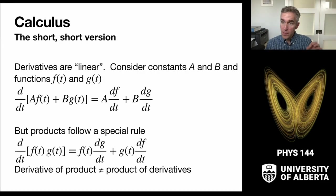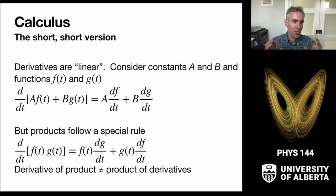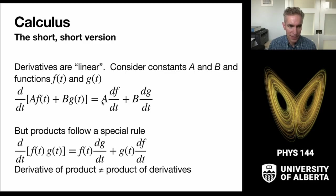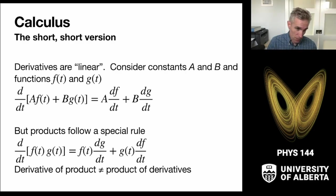The first mathematical tool is that derivatives are linear. Linear means that if I have a combination of two functions, f(t) and g(t), multiplied by constants A and B, I can pass the time derivative operator in and apply it to f and g separately, pulling the constants out front. So d/dt of [A·f(t) + B·g(t)] equals A·(df/dt) + B·(dg/dt). We'll use that tool occasionally — it's very useful.